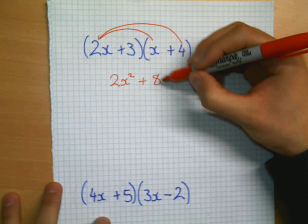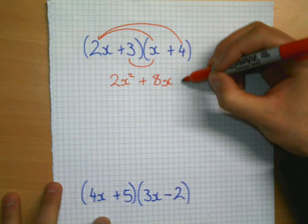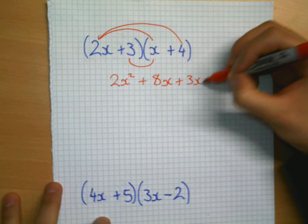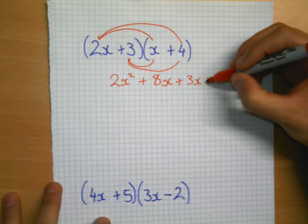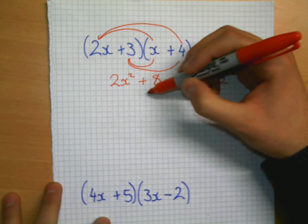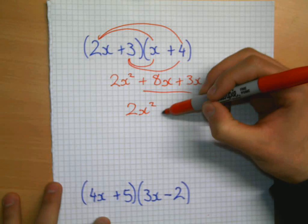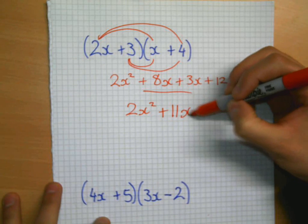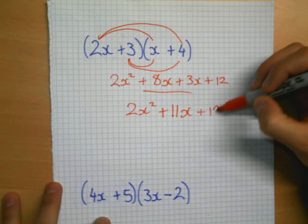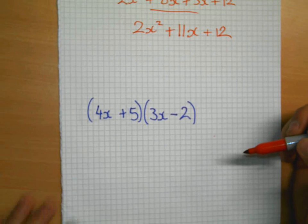2x times by 4 will be positive 8x. 3 times by x, positive 3x. 3 times by 4, positive 12. And as you're aware, we have to collect the like terms. That is 2x squared plus 11x plus 12.